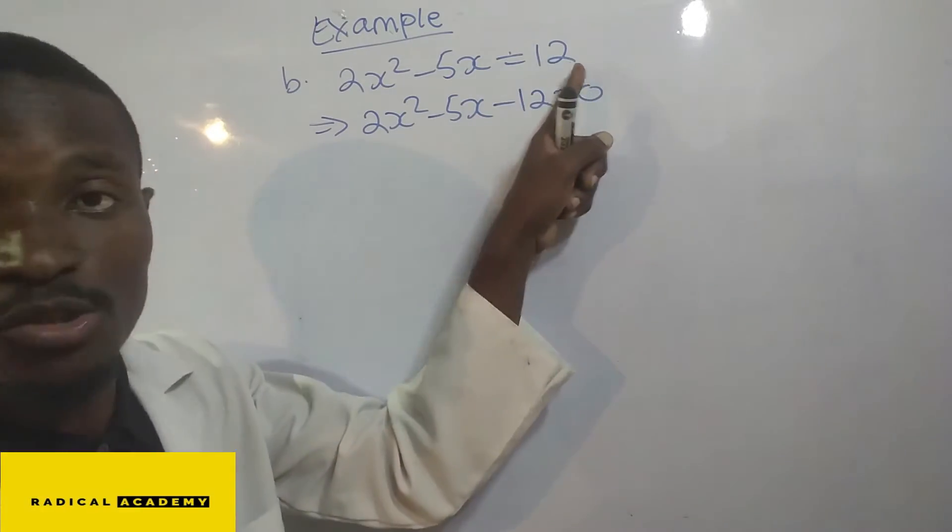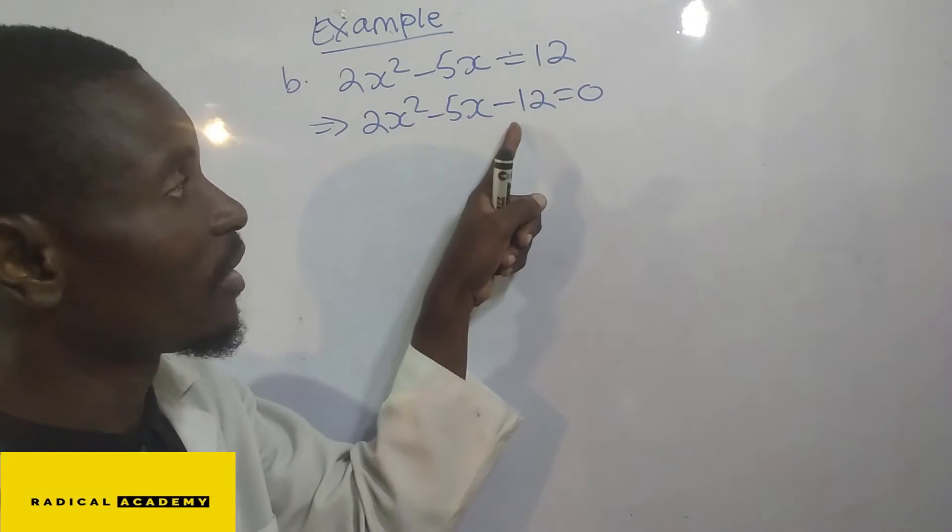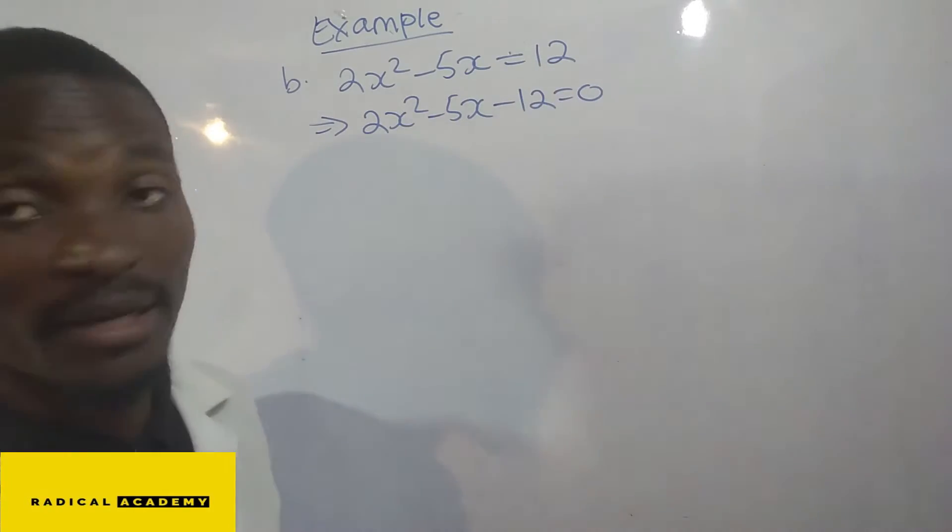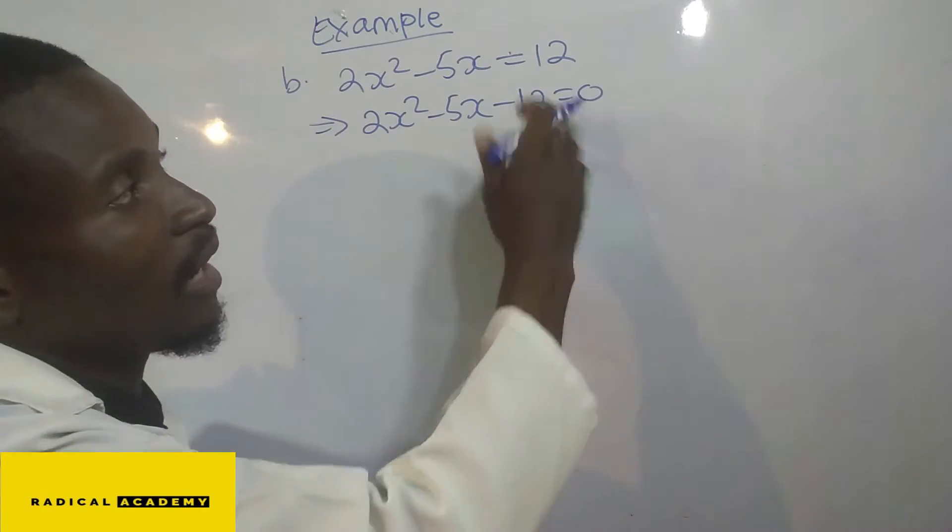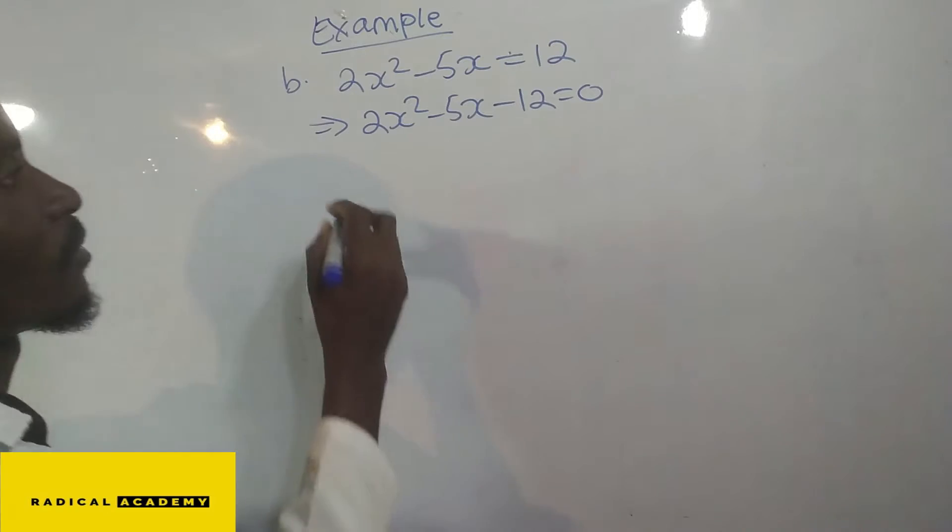So once we bring it onto the left-hand side, it changes the sign. It is positive, and then now it becomes negative. And then after the equals sign, what remains is now zero.